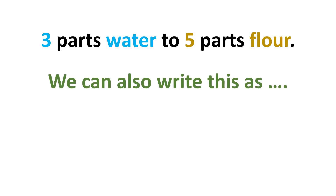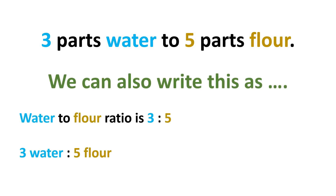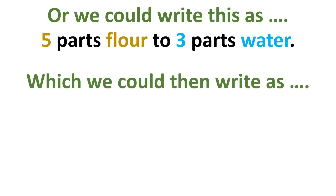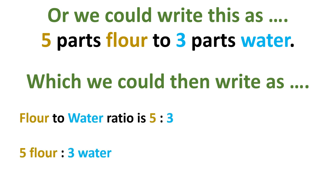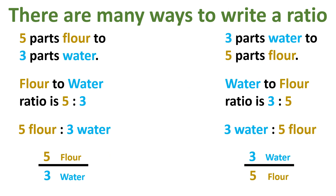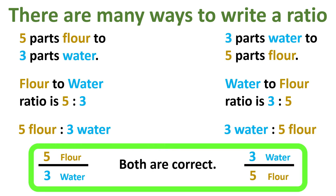We often write ratios with a colon, but we can also write them using a division bar. Since there is no fixed denominator or numerator, we can switch the order of the things in the ratio, which means when we use the division bar it will be upside down compared with the other one. The main thing to know is that we can put either number above the division bar and either one below.